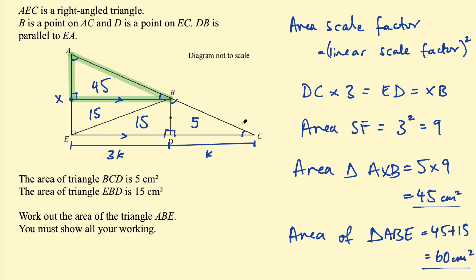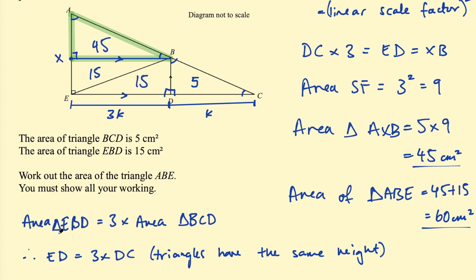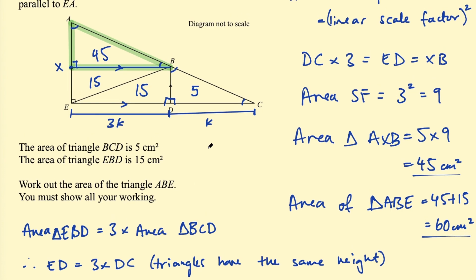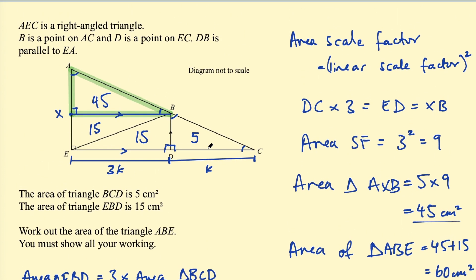As it says to show all working, I should note the steps we took. The main thing to add is the explanation showing that ED = 3 × DC, derived from those areas. And that was the first question — on to the next one.